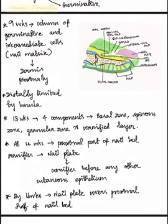At 14 weeks, the proximal part of the nail bed cornifies to form the nail plate. This nail plate is the first structure to cornify before any other cutaneous epithelium. By 16 weeks the nail plate covers the proximal half of the nail bed, and by 20 weeks it also covers the distal half of the nail bed and completely resembles an adult nail.